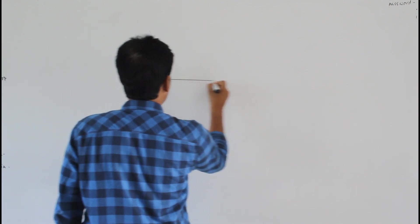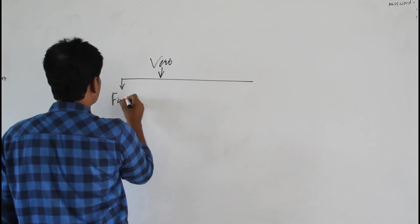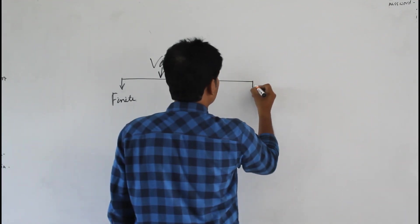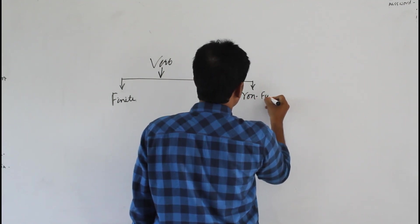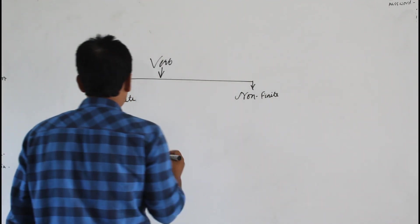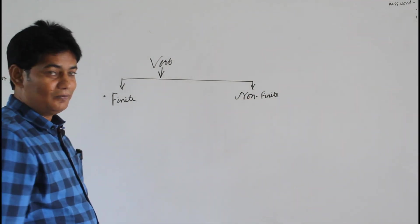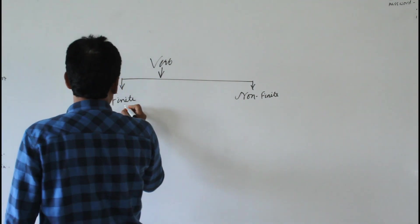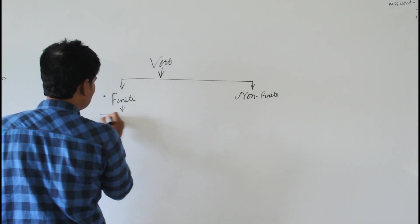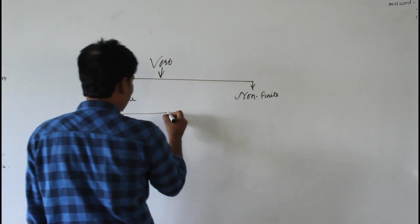That's why verbs are divided into two: finite verb and non-finite. This finite verb is exactly what a verb is — without it we cannot form any sort of sentence. This very finite can be divided into two: principal verb and auxiliary verb.